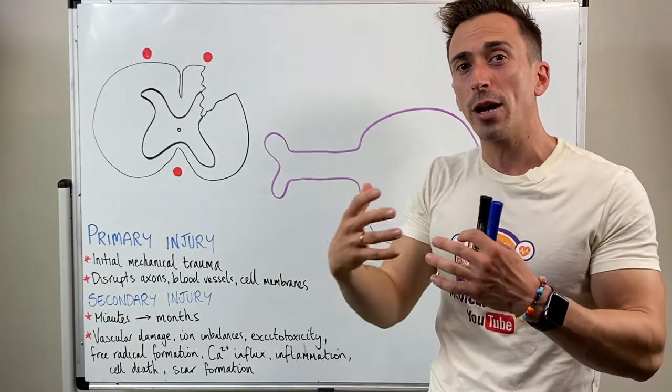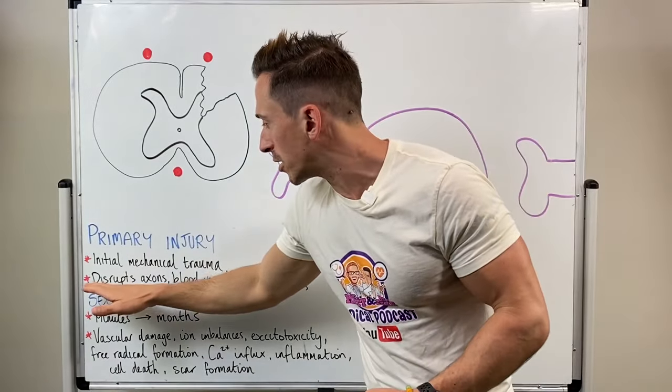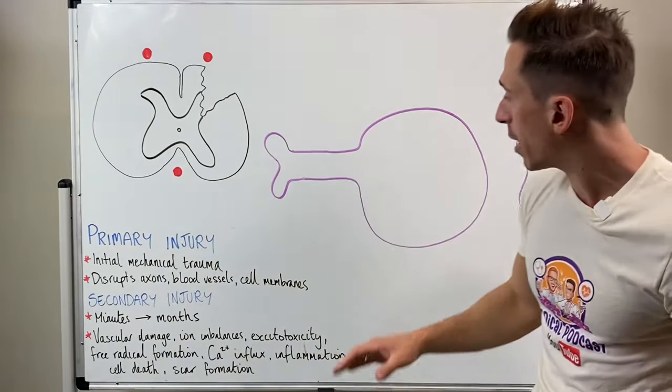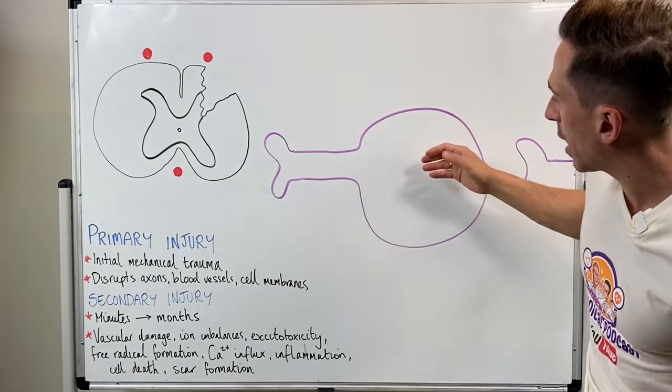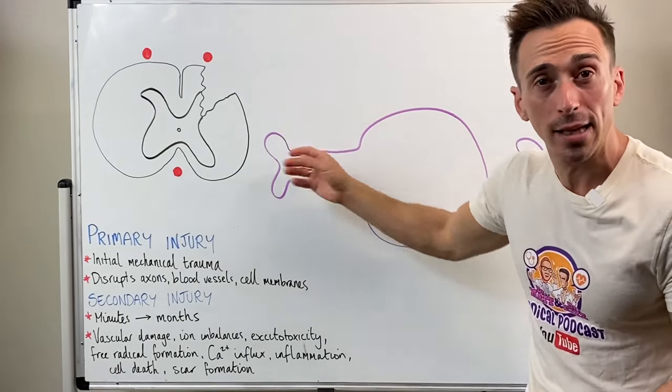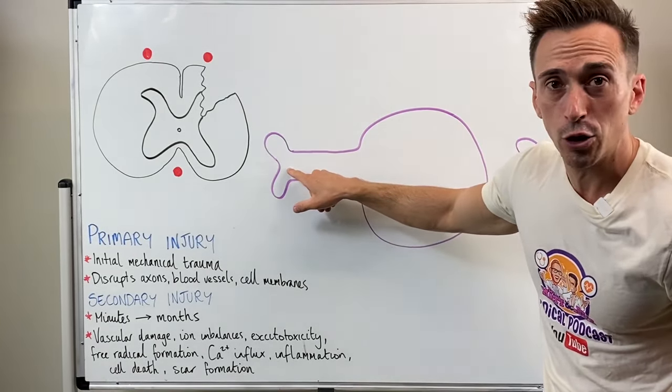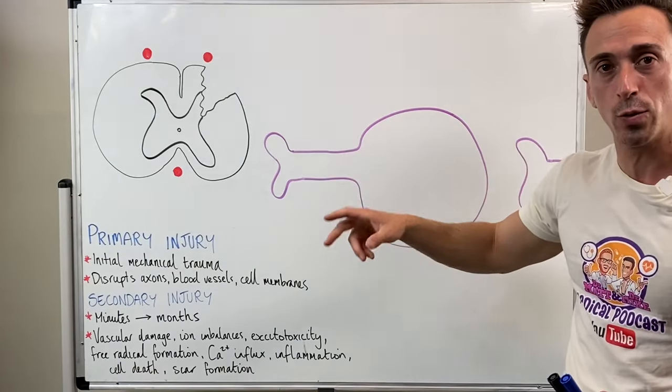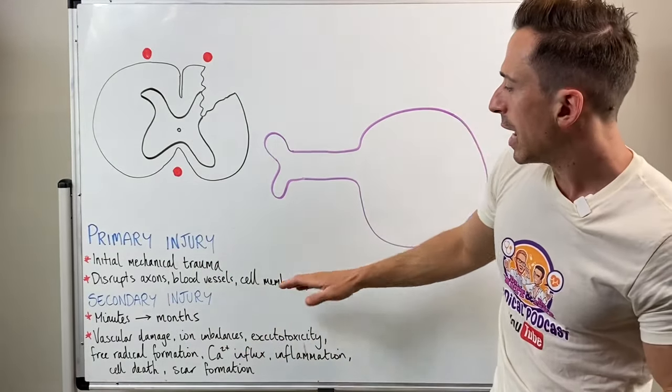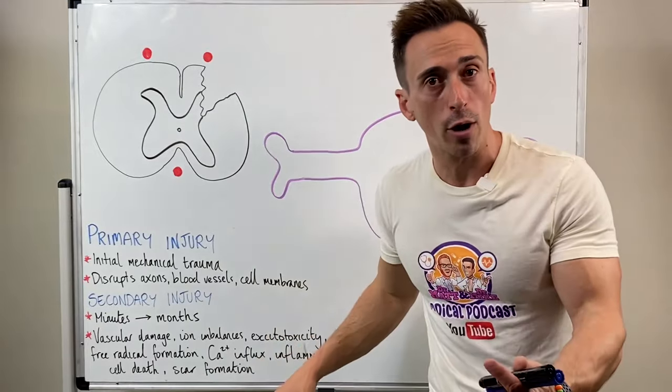In the primary injury, you're going to find disruption of axons. Remember, you've got a neuron—the body of the neuron, the axon that sends the electrical signal, and then the end of the neuron. So you've got damage of these axons, which means no signal's being sent. And you've also got damage to the cell membranes.